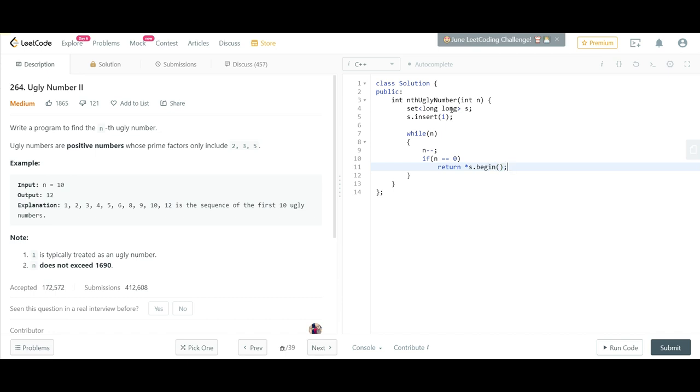We will return the beginning value. Else, what we will be doing is we will be taking the first value. First of all, remove the value present at the starting with the help of s.erase. Now insert in set: v multiplied by 2, v multiplied by 3, and v multiplied by 5.